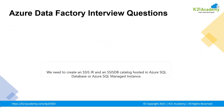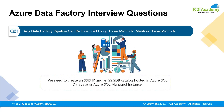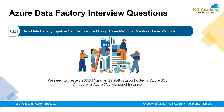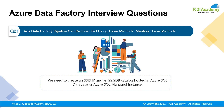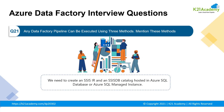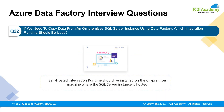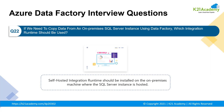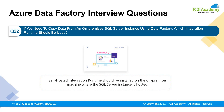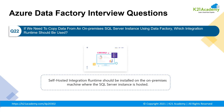Moving to our next question: any Data Factory pipeline can be executed using three methods — mention these. The first is under debug mode; the second is manual execution using trigger now; and the third is using an added schedule, tumbling window, or an event trigger. Moving to our next situational question: if we need to copy data from an on-premise SQL Server instance using Data Factory, which integration runtime should be used and where should it be installed? A self-hosted integration runtime should be installed on the on-premise machine where the SQL Server instance is hosted.